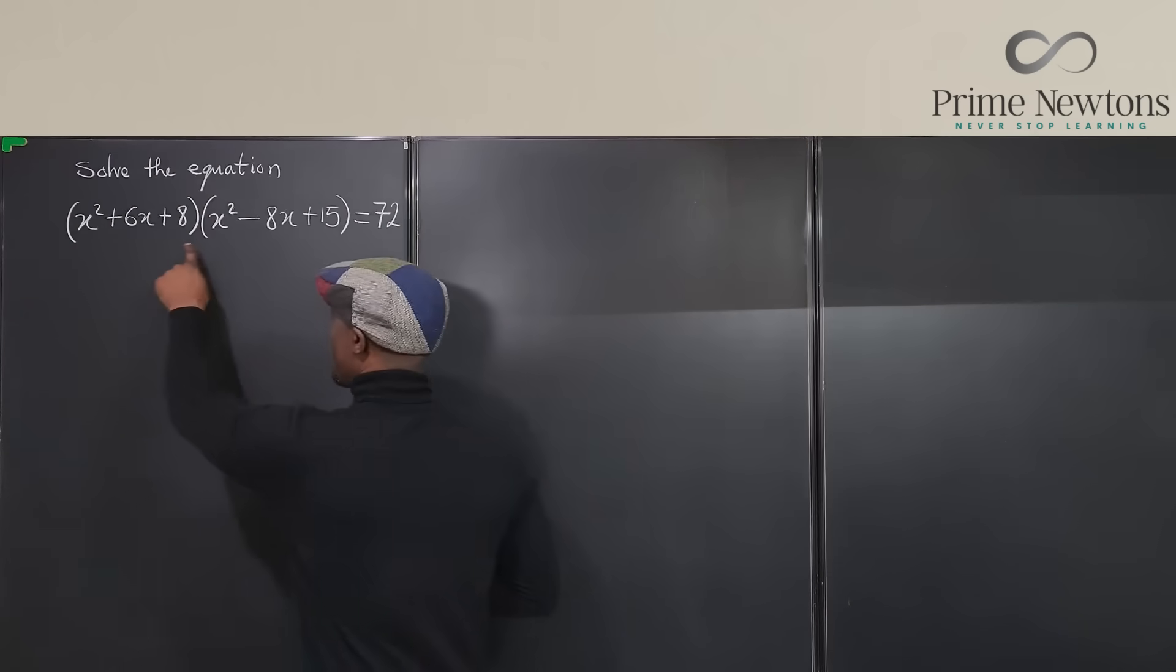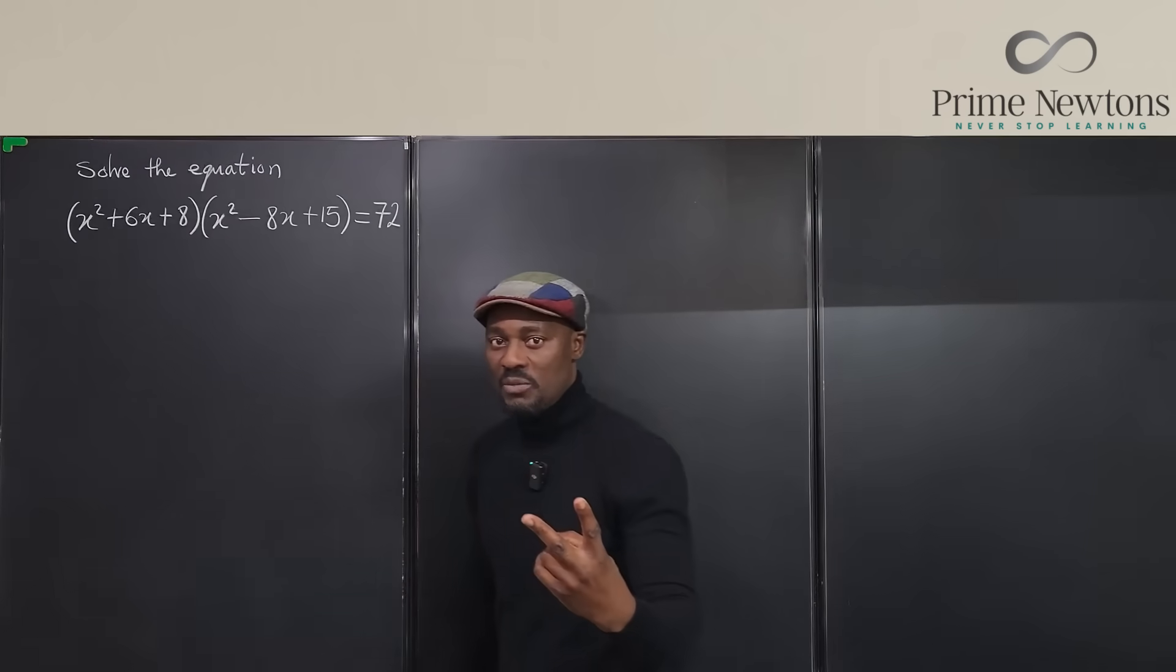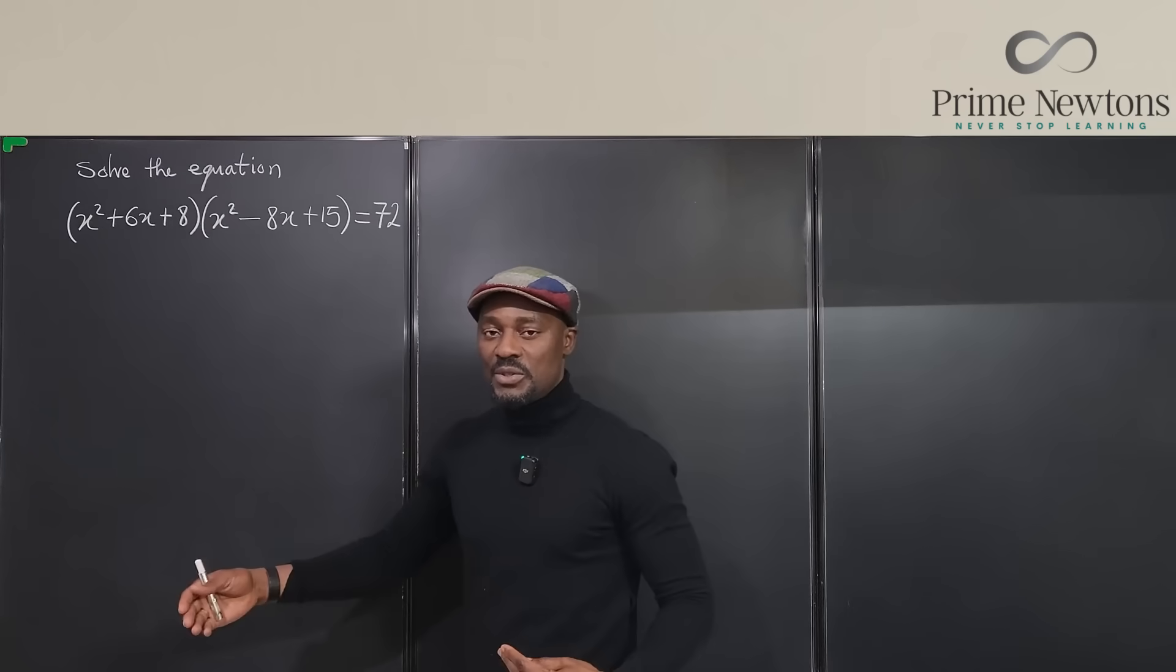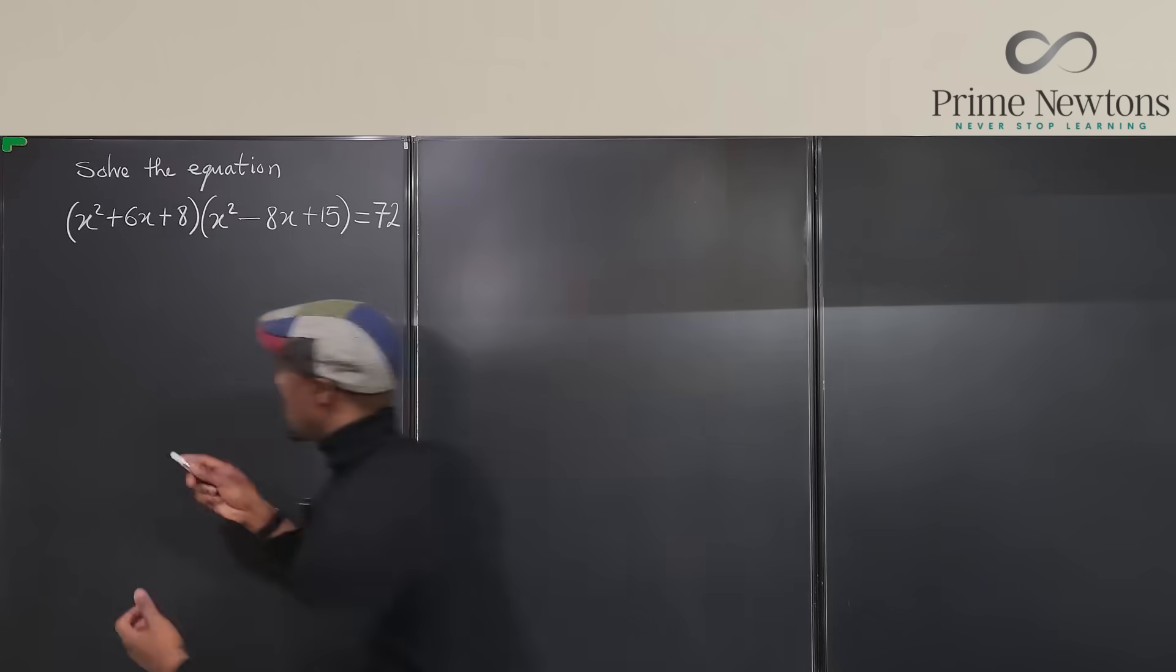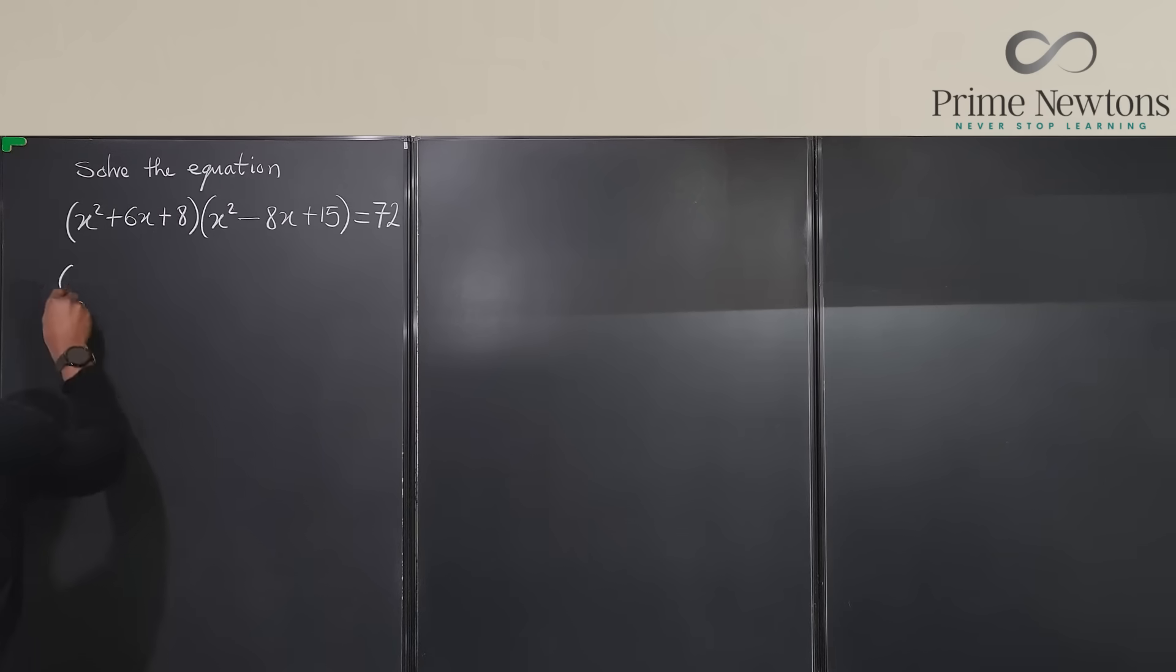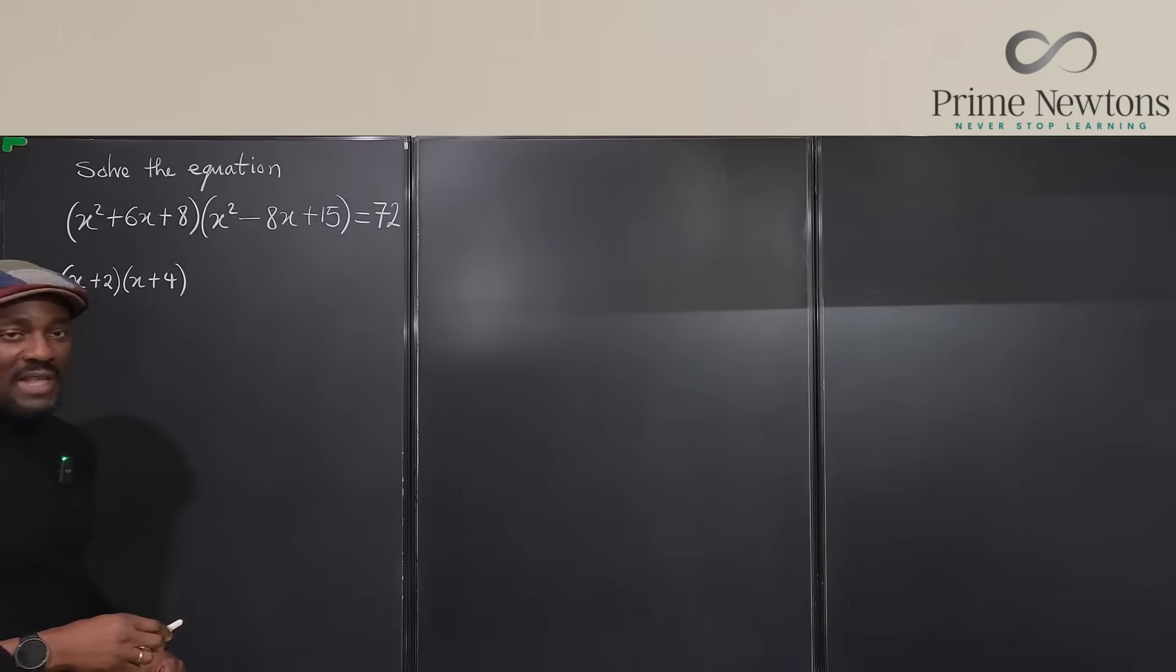So if I look at this quadratic, this is easy to factor because I have to look for two numbers that multiply to eight and add up to six. And those two numbers must be two and four. So I'm going to factor this as x plus two, x plus four. That's the factored form of the first quadratic.